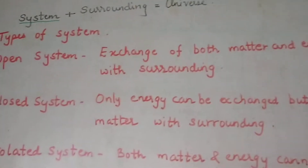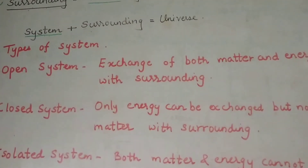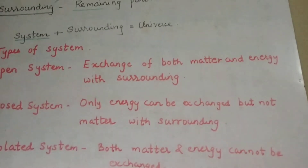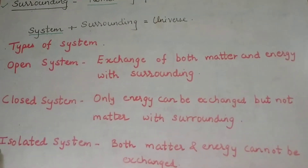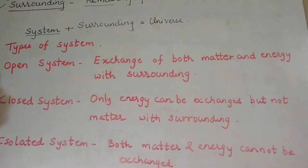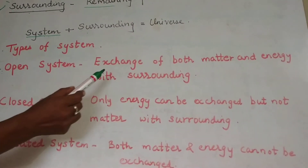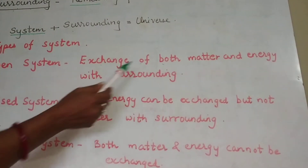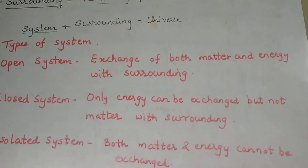Next comes the types of systems. There are three types of systems: open system, closed system, and isolated system. An open system is one where the exchange of both matter and energy can take place with the surrounding.